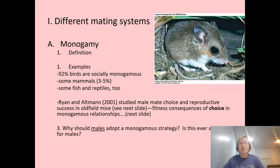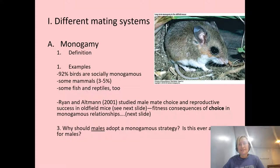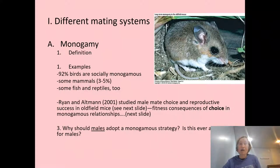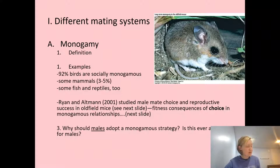92% of birds are socially monogamous — they form pair bonds and work together to raise young. Socially monogamous means they generally stick together as a pair, but there may be extra-pair copulations, which can lead to males raising young that aren't their own — being cuckolded. Almost 5% of mammals are thought to be monogamous, and even some fish and reptiles, such as certain gibbons, mute swans, convict cichlids, giant rats, and shingle-back skinks.